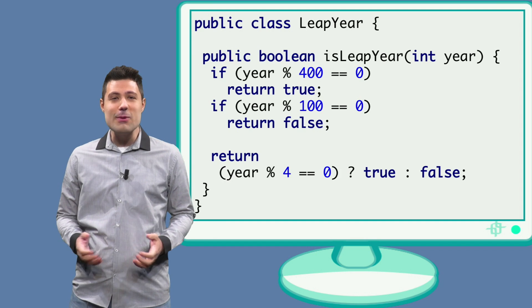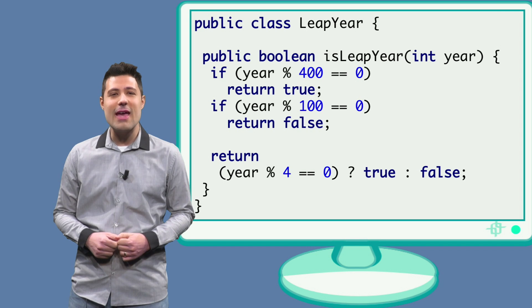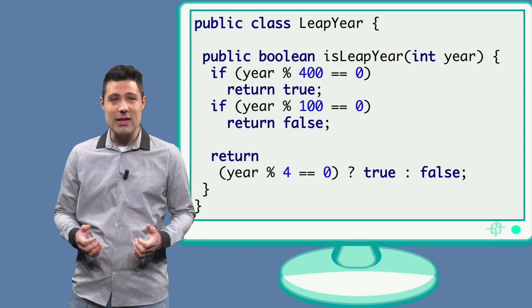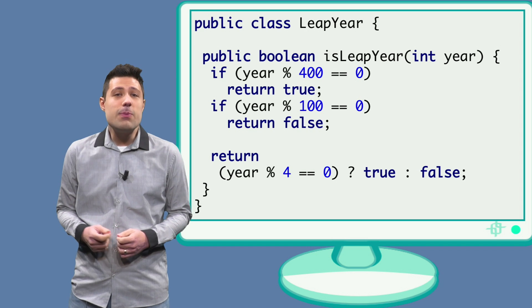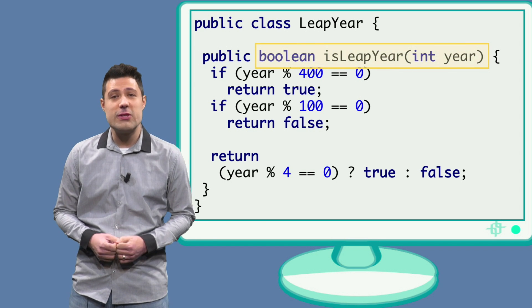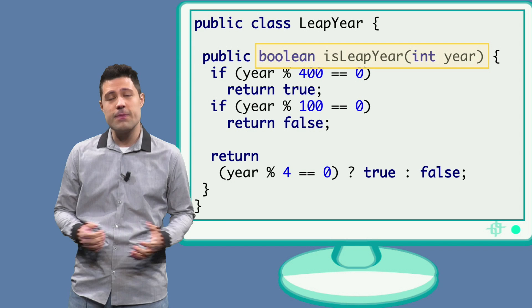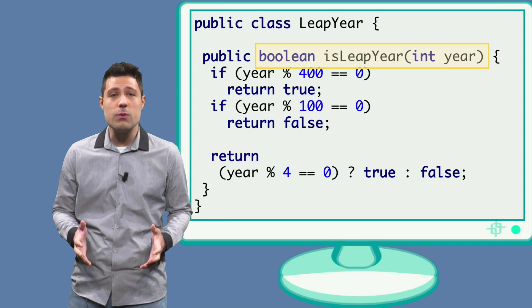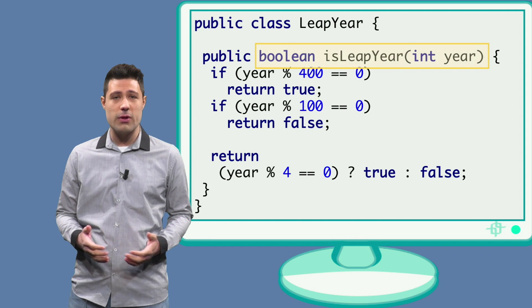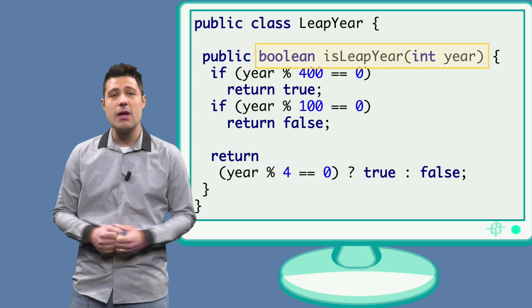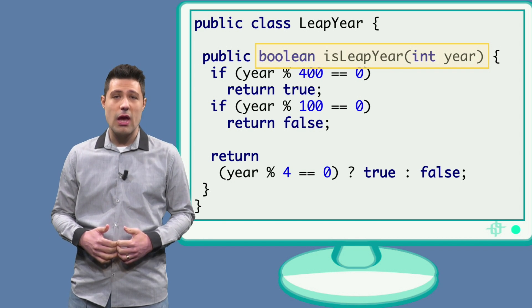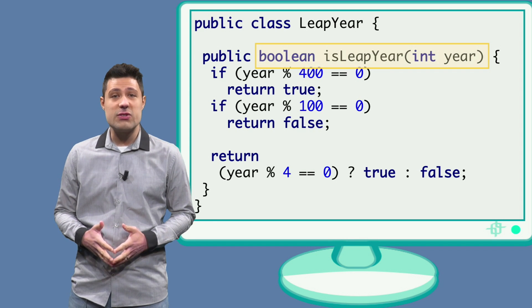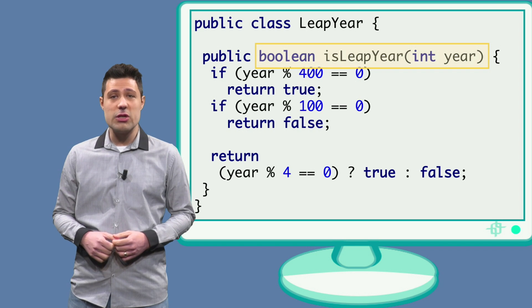Our development team is quite fast — we already have an implementation for the leap year problem. The code is this isLeapYear method, which receives an integer (the year) and returns a boolean. What we are going to do is invoke this method with different inputs, different years, based on our partitions, and see if this isLeapYear method returns what we expect.